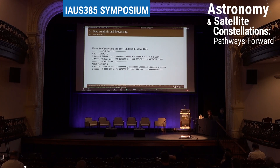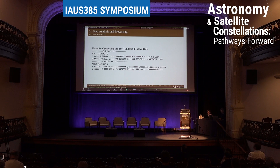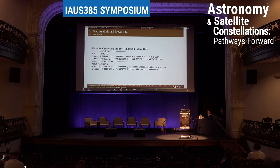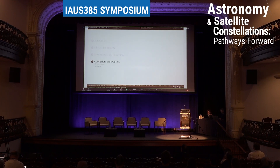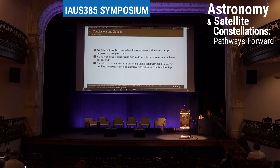We have an example of a two-line element generated using our script. We are currently in the testing phase, using existing two-line elements to generate new orbital elements. For the Atlas satellite, for example, we have generated the orbital elements with some variation and difference compared to the reference two-line elements.